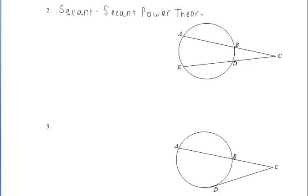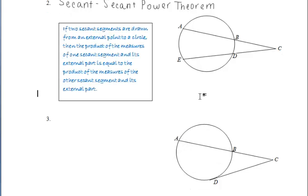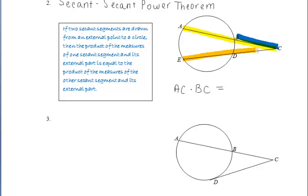In number two, we can see two secants in the diagram. The secant-secant power theorem states that if two secant segments are drawn from an external point to a circle, then the product of the measures of one secant segment and its external part is equal to the product of the measures of the other secant segment and its external part. Applying it: the entire secant segment AC times the external part BC must equal the entire secant segment EC times its external part CD.